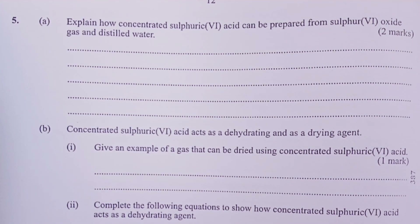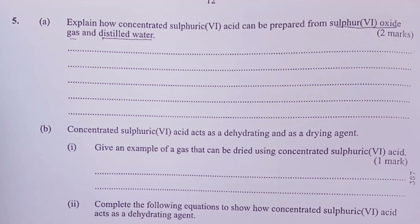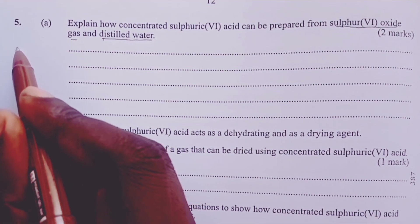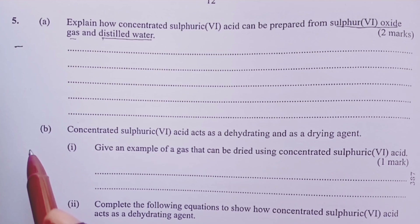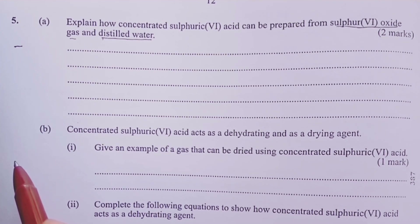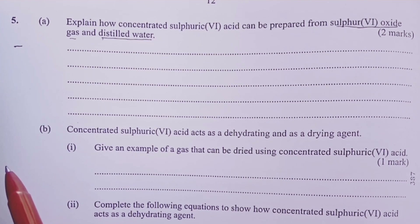Part A asks: explain how concentrated sulfuric acid can be prepared from sulfur trioxide gas and distilled water. This question specifies the starting materials as distilled water and sulfur trioxide gas. Most students have never come across this kind of scenario because we always teach that this exercise can be very dangerous since the reaction is highly exothermic. We normally advise that the gas should be dissolved in concentrated sulfuric acid to form oleum first, which is then diluted with distilled water.